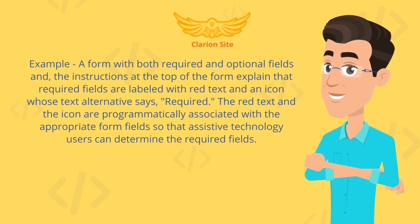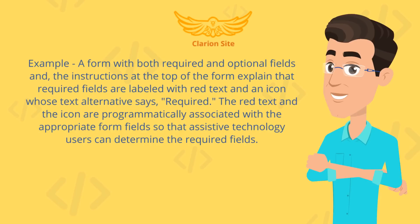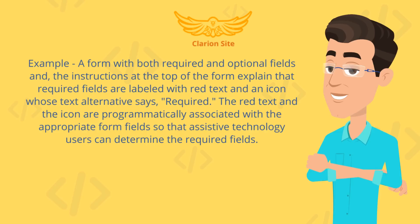Example: A form with both required and optional fields. The instructions at the top of the form explain that required fields are labeled with red text and an icon whose text alternative says 'required.' The red text and the icon are programmatically associated with the appropriate form fields so that assistive technology users can determine the required fields.